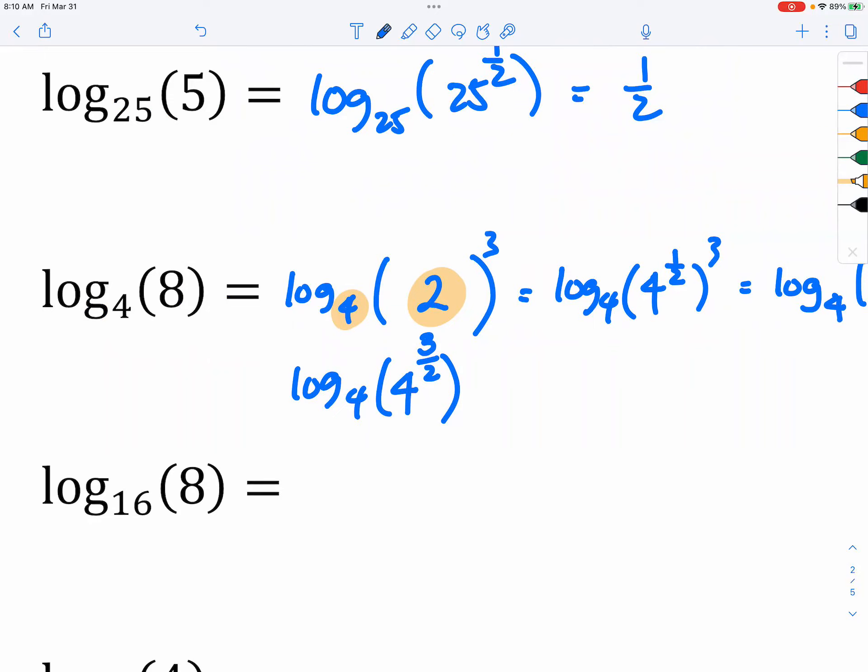Again, there's a number 4 right here. You want to express the number 8 as 4 to a certain power. So you think about, wait, hold on, I can square root the 4. That's why you put a 2 in the denominator. You square root the 4, and then you raise it to the 3rd power to get 8.